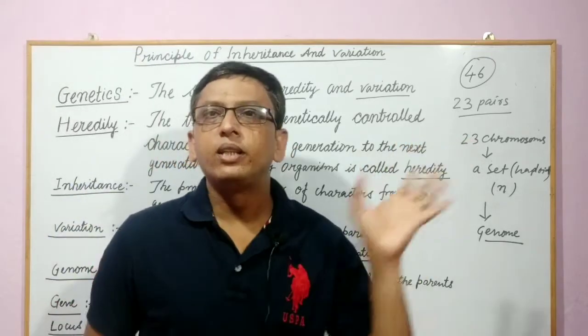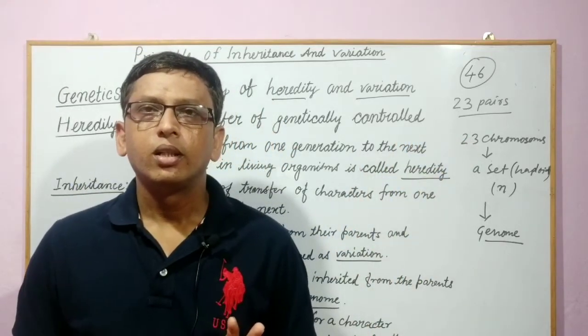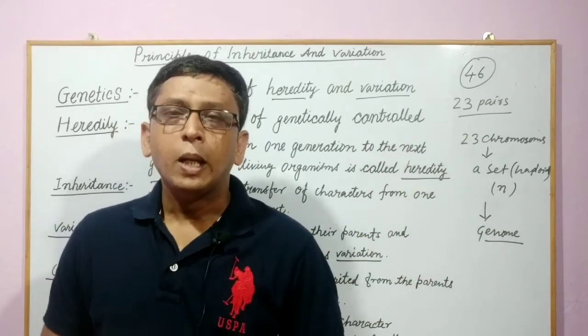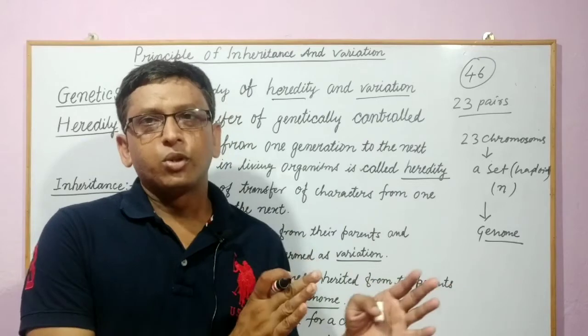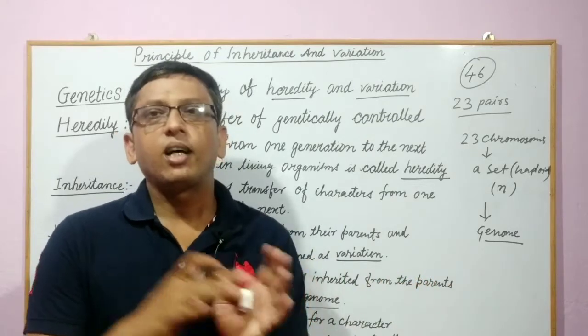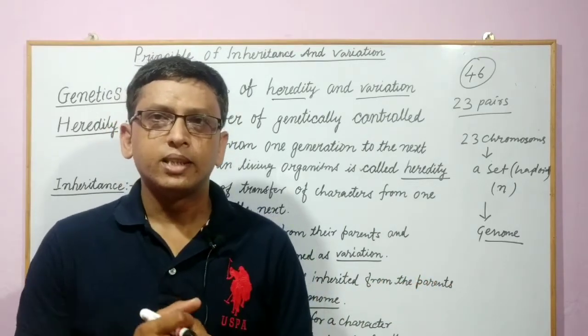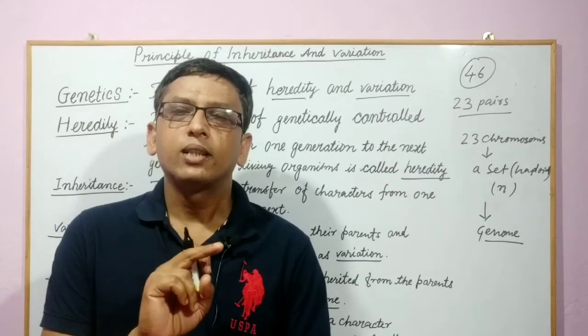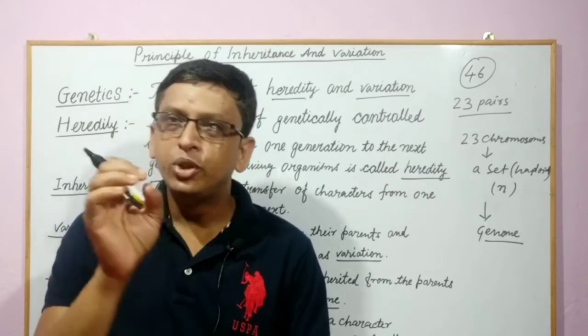Why are we taking 23 chromosomes only? As we have 46 chromosomes in a cell? Because the 23 chromosomes resemble the other 23 chromosomes. That means, in each pair, the chromosomes are similar to each other and same genes are present.